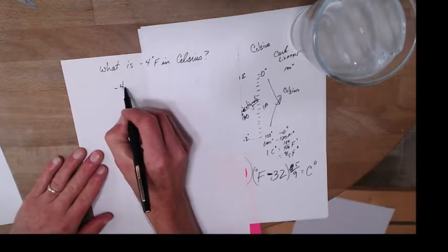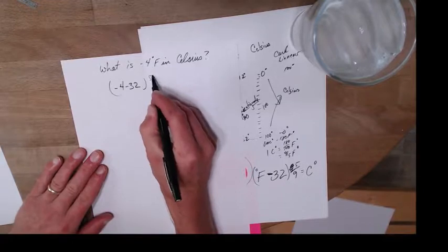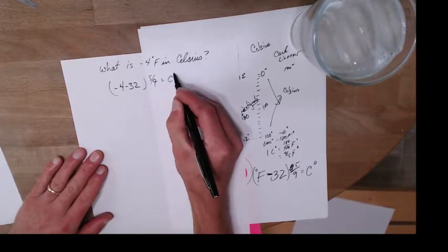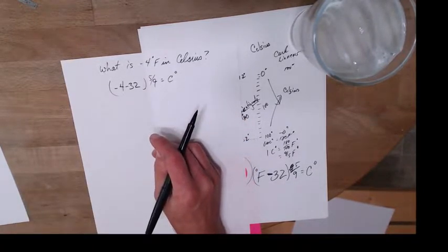So here's our formula again. I'm going to have negative four minus 32 times five ninths and that's going to give me my degrees Celsius.